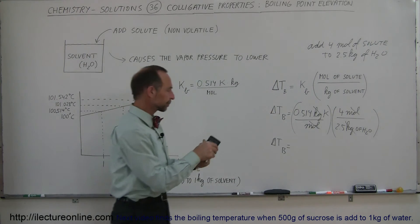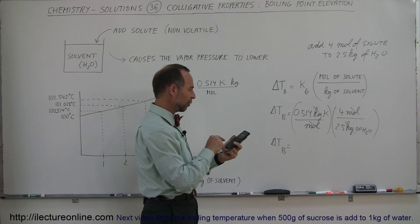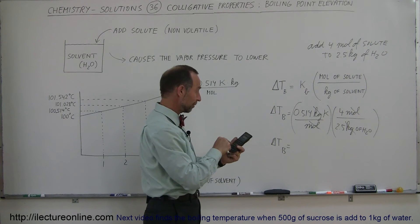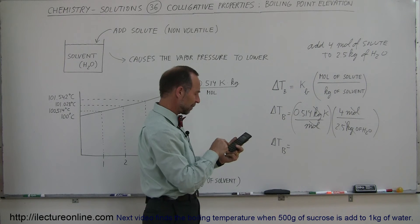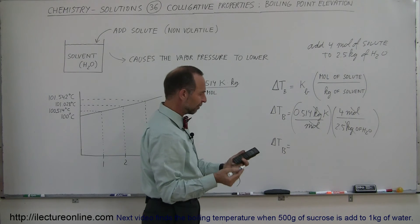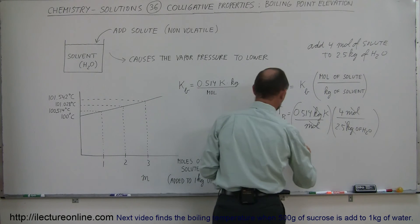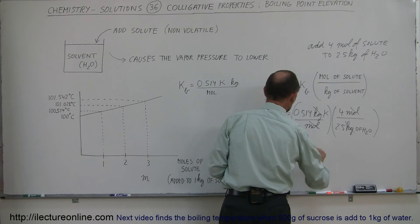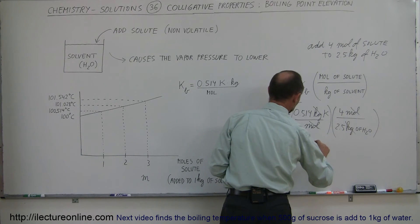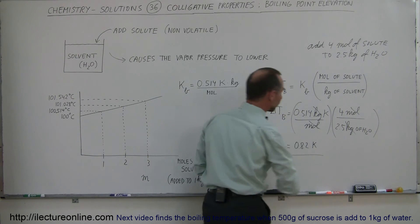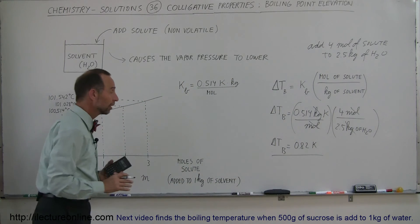Let me use my calculator. 0.514 multiplied times four, divided by 2.5, and we see an increase of 0.82. So it would be 0.82 centigrade degrees or Kelvin degrees larger than the normal boiling point of 100 degrees centigrade.